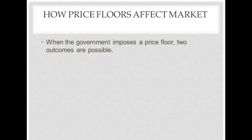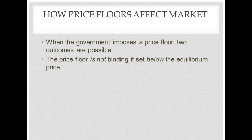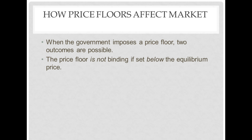To summarize price floors: when the government imposes a price floor, two things can happen. First, the price floor is not binding if it's set below equilibrium. It is binding and does have an effect if it's set above equilibrium, and that leads to a surplus. One funny thing about price ceilings and price floors: price floors have to be above equilibrium to be effective, and price ceilings have to be below equilibrium to be effective. That seems odd — the ceilings are below and the floors are in the air — but that's the situation.